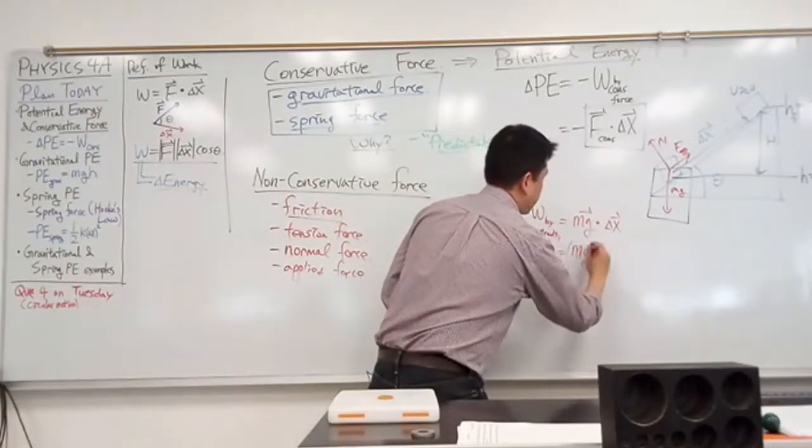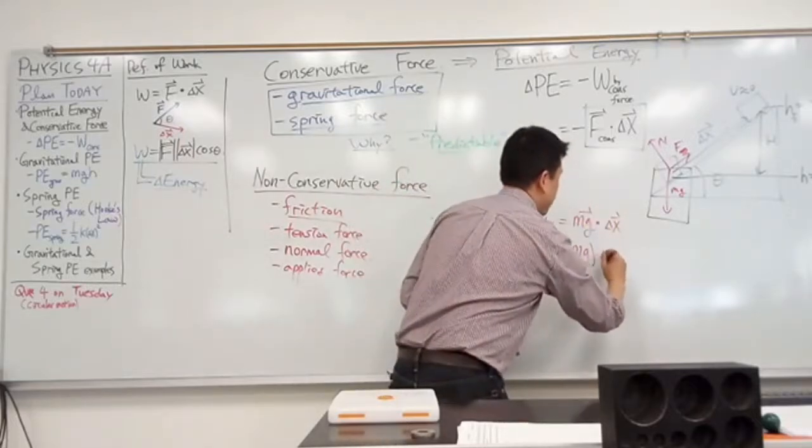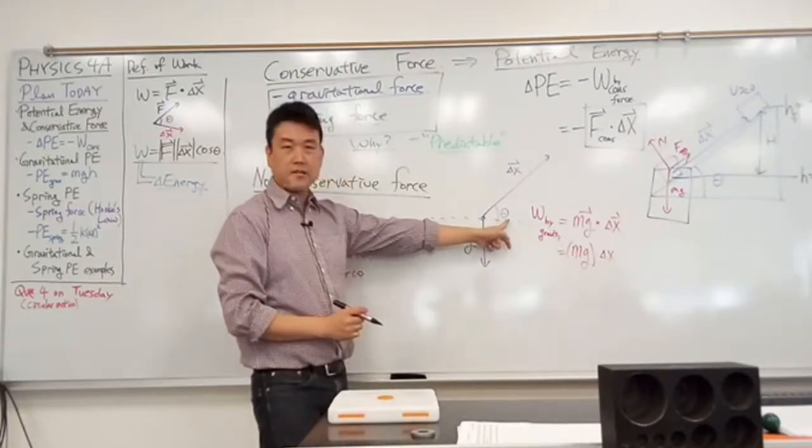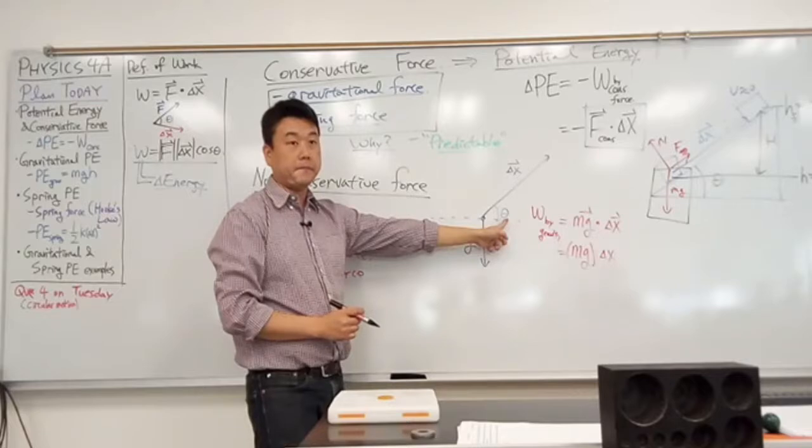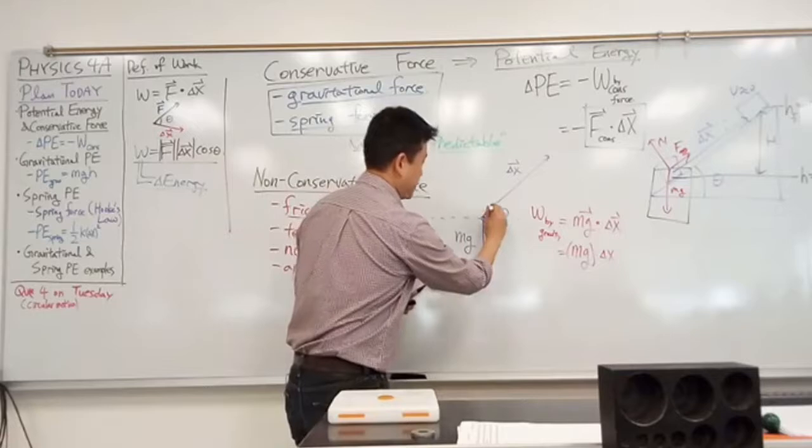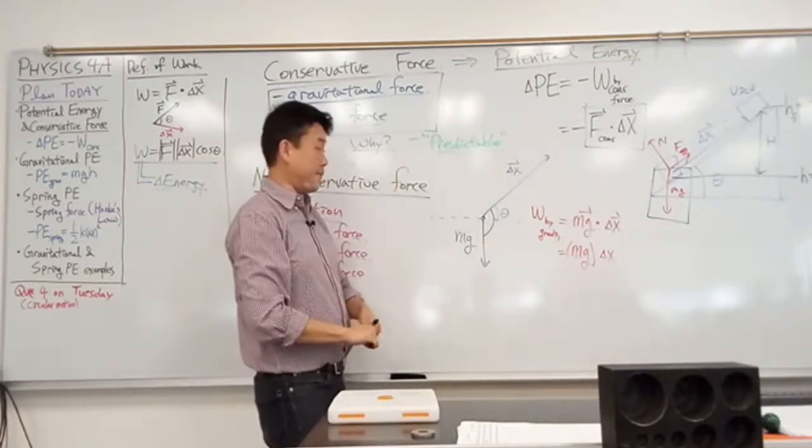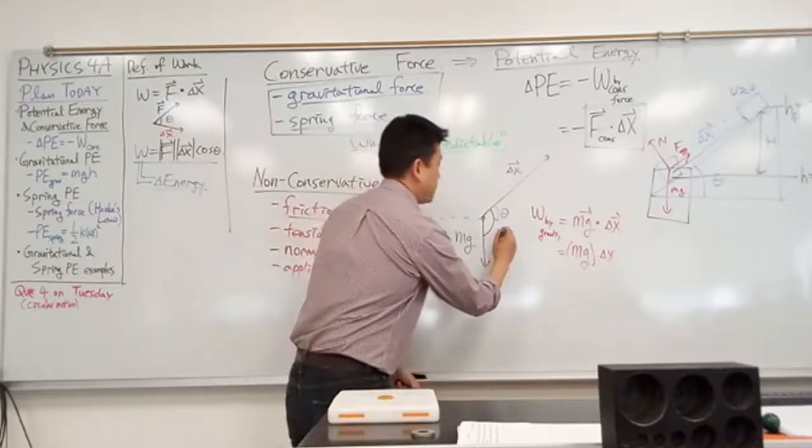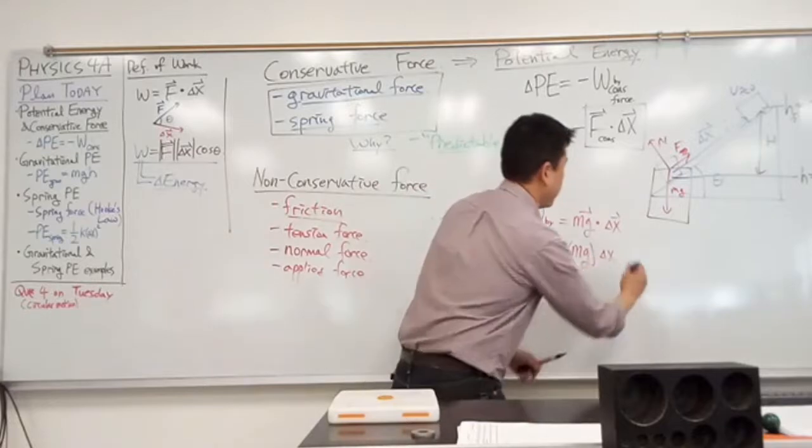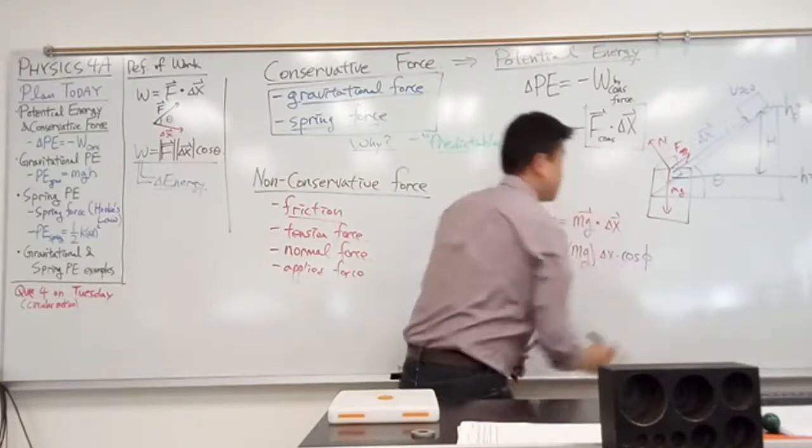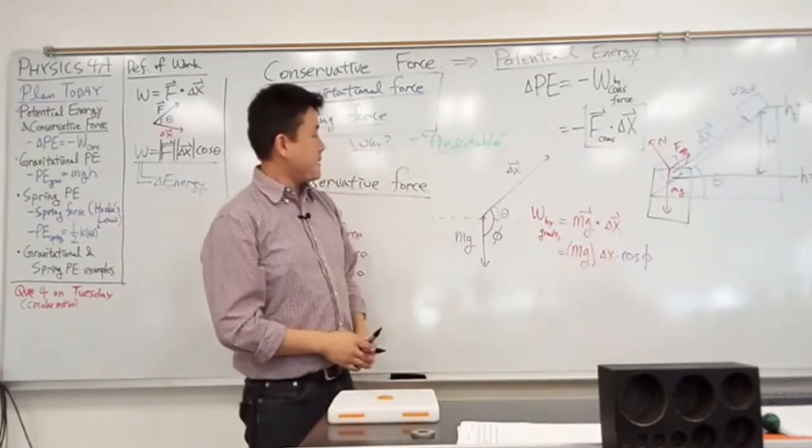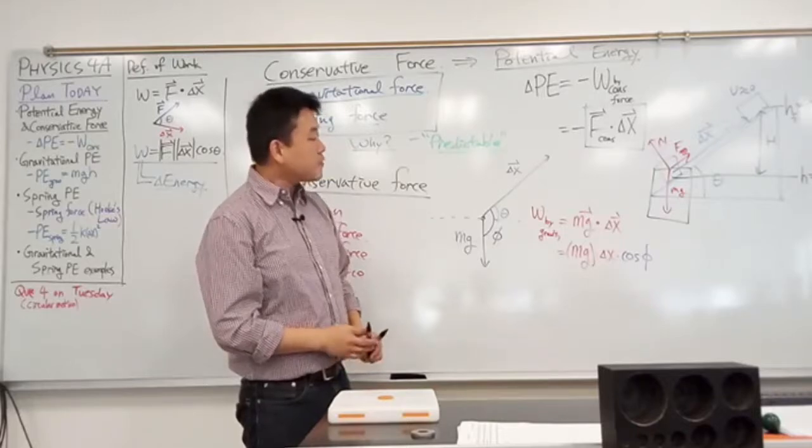mg, so that's the magnitude, times the distance, delta x, times, when it says cosine theta, is it this theta that it's talking about, or a different angle? Different angle, right? It's talking about this angle here. Angle between the two vectors. So let me use a different symbol for this, phi. So it's mg, delta x, times cosine of phi. I want to express this in terms of theta.